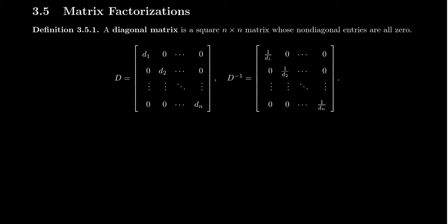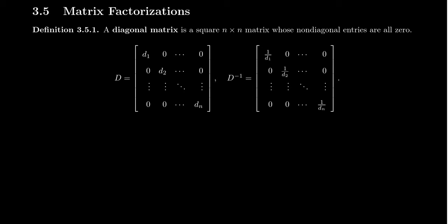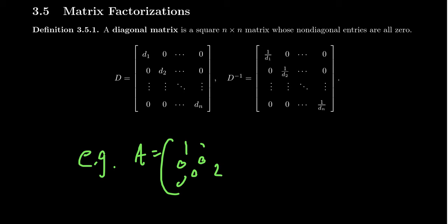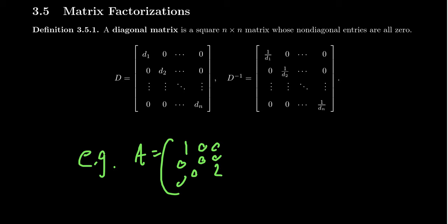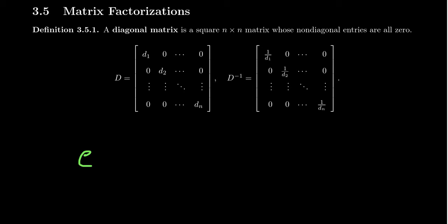That's not to say that the numbers on the diagonal are non-zero. For a diagonal matrix, we do allow for zeros along the diagonal. An example of such a thing would be a matrix with 1, 0, 2 along the diagonal and zeros everywhere else. This is an example of a diagonal matrix — we allow any number along the diagonal we want.